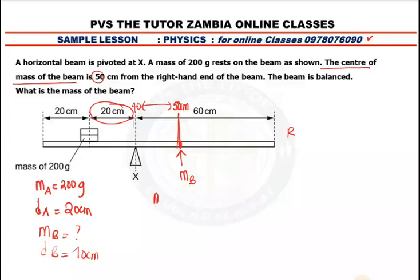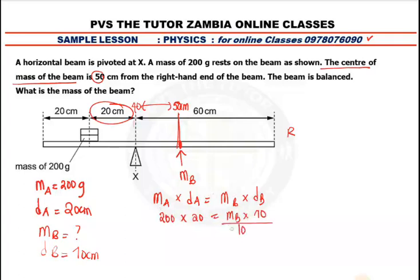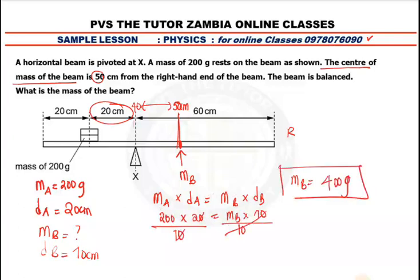So we say: MA multiplied by DA equals MB multiplied by DB. MA is 200 grams, DA is 20 centimeters. MB we don't know, but DB is 10. So: 200 × 20 = MB × 10. Divide both sides by 10, giving MB = 400 grams. That is the mass of the entire beam.